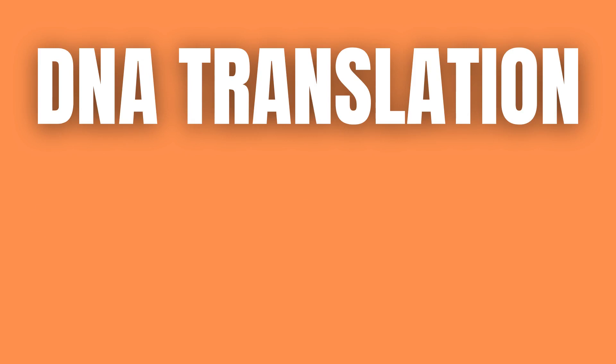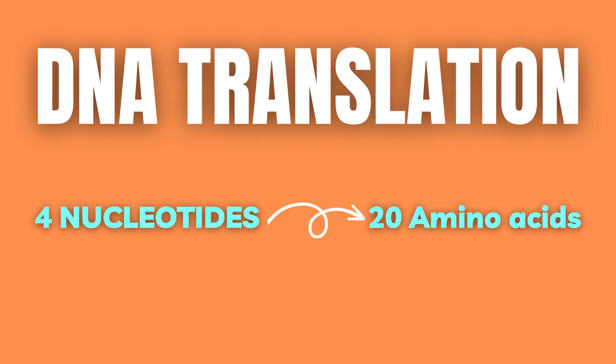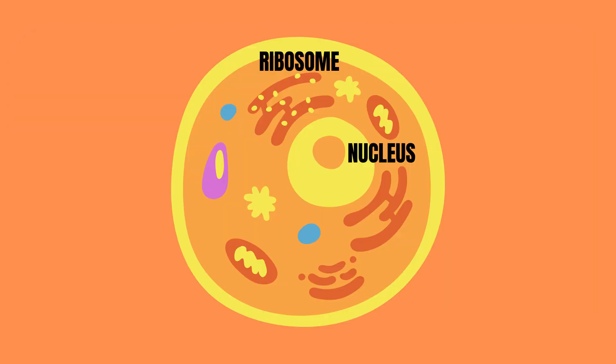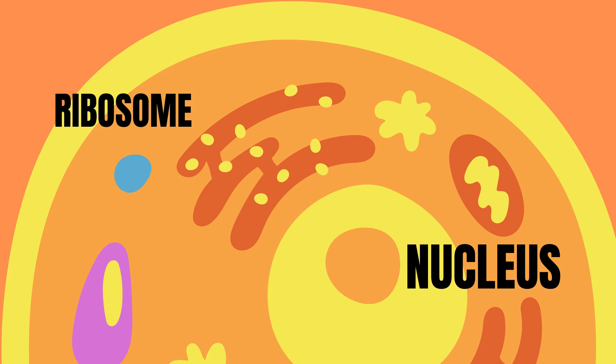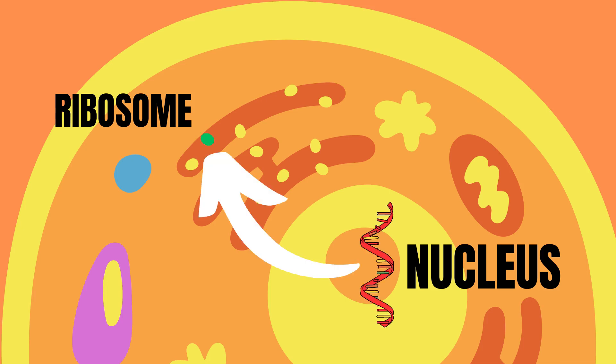DNA translation converts the four-letter nucleotide language of RNA into the 20-letter amino acid language of proteins. After DNA has been transcribed into mRNA, this mRNA moves from the nucleus into the ribosome where it gets translated.